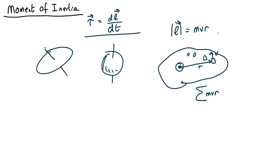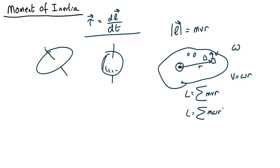We can simplify things a little bit because the velocity of an object will vary — the things furthest from the axis spin faster. But everything in a rigid body has the same angular velocity omega. And if you remember, the linear velocity v equals omega r. So the total angular momentum equals the sum of mvr, and we can replace v with omega r, giving us m omega r squared.